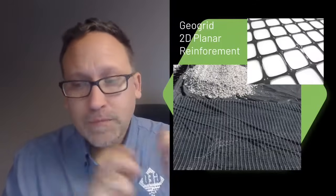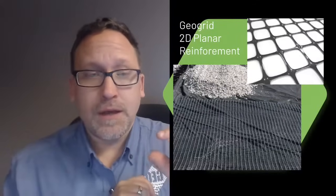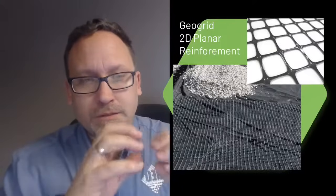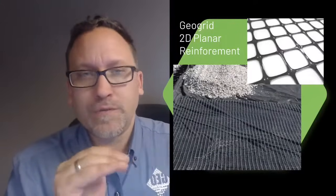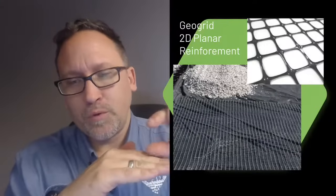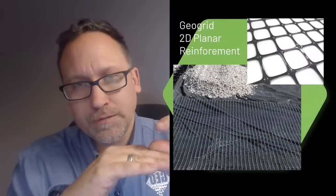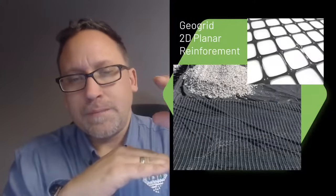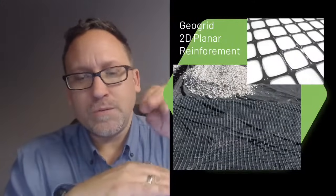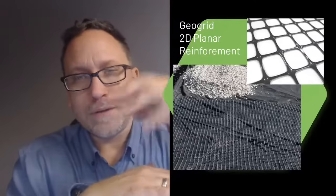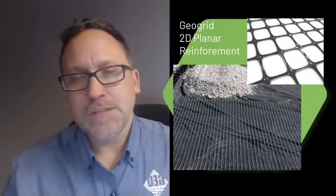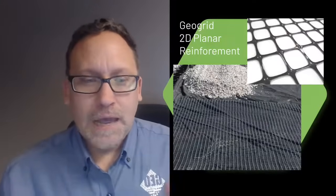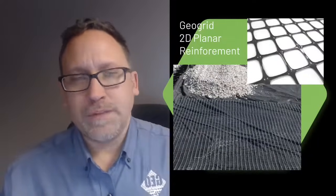Now because it is only 2D, the strength that that geogrid provides only translates up to a couple layers of stone above it. Once you get above that, you lose a lot of that benefit. So you're still able to have that material spread laterally. You're still going to get rutting, you're still going to get some improvement, but it's not as great as it is when it's right above that layer.